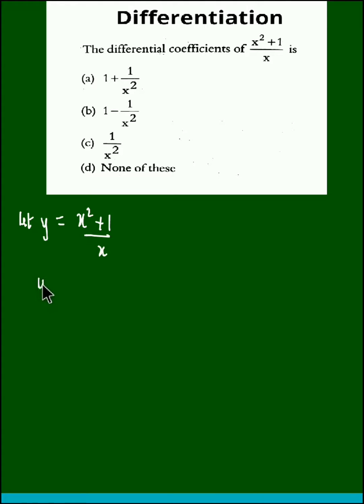Now this could be rewritten as y is equal to x squared upon x plus 1 upon x. If we simplify, we obtain x squared upon x is x plus 1 upon x.